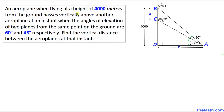An aeroplane when flying at a height of 4000 meters from the ground passes vertically above another aeroplane at an instant when the angles of elevation of these two planes from the same point on the ground are 60 degrees and 45 degrees respectively. We have these two planes, and the top plane at point B has a height of 4000 meters.